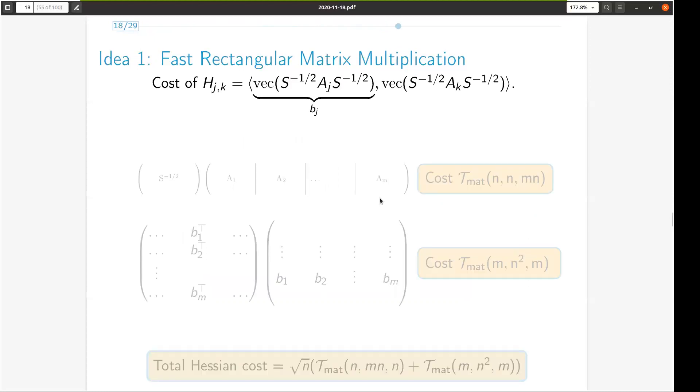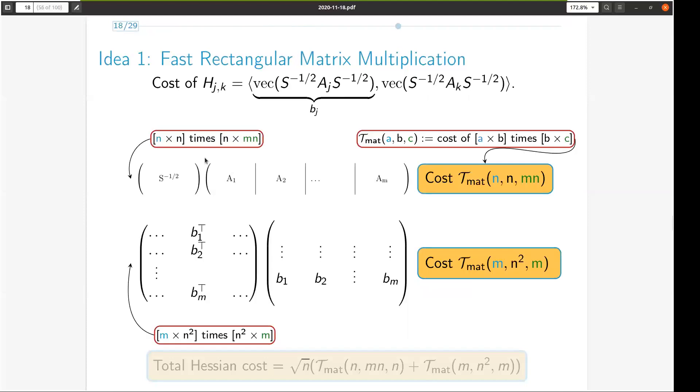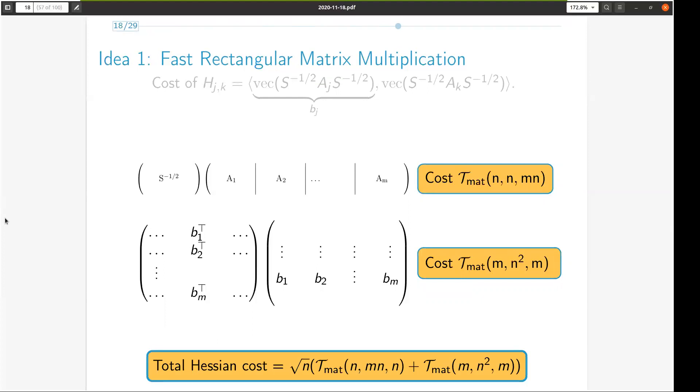We can improve this cost by using the cyclic permutation property of trace, and rewriting each Hessian entry in the form of this inner product. To compute each component within the inner product, we stack the matrices ai and perform these multiplications. We use the notation tmat of ABC to denote the cost of multiplying an A by B matrix with a B by C matrix. We eventually simplify the tmat terms into something more efficient than the naive cost shown in the previous slide. However, this is still not enough to beat the cutting plane method, which is why we need our second idea, the use of approximate slack matrix.